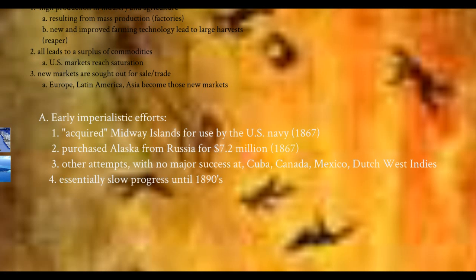Early efforts: in 1867, we acquire the Midway Islands — a small set of uninhabited islands no one knew about. We used them as a coaling, or refueling, station. Coal was the main source of fuel for our steam-powered ships, and it was literally a midway point between the United States and Asia.